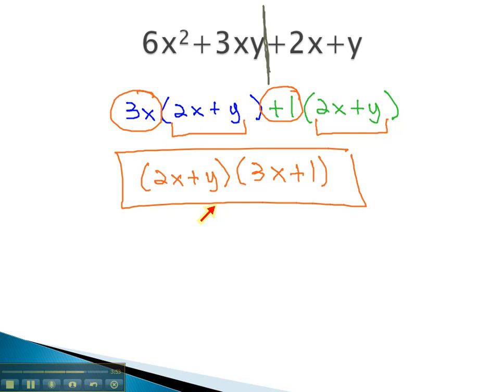By dividing the problem into two groups and factoring the left and right, often we can find a matching binomial common factor.